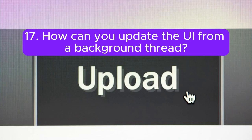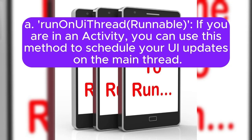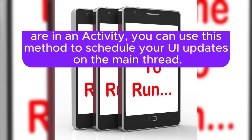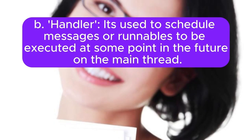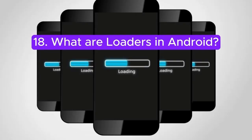Question 17: How can you update the UI from a background thread? To update the UI from a background thread in Android you can use: runOnUiThread(Runnable) if you are in an activity, to schedule UI updates on the main thread; Handler, used to schedule messages or runnables to be executed on the main thread; or View.post(Runnable), which posts the runnable to the message queue of the thread that created the view.